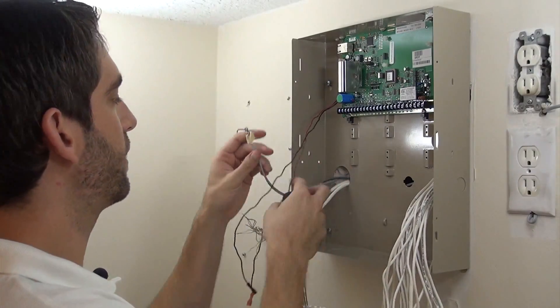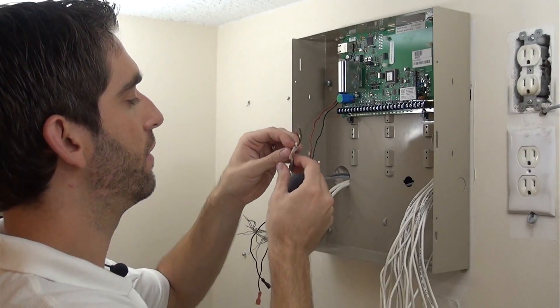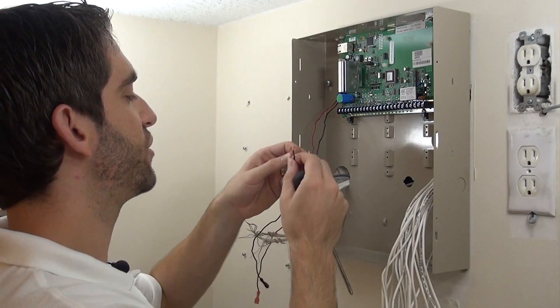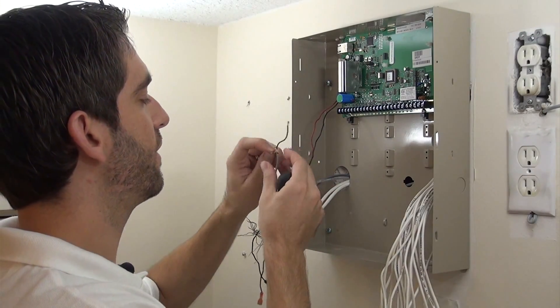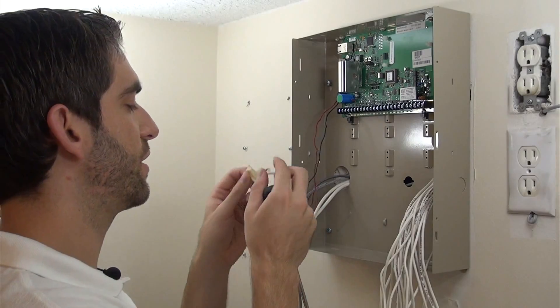So we've got our label showing transformer. It's black and the red. Again, polarity does not matter. So you've got our first two terminals labeled AC on our 21iP.